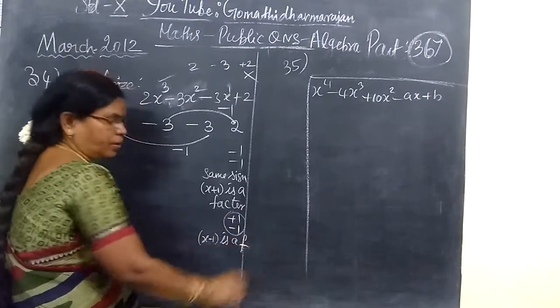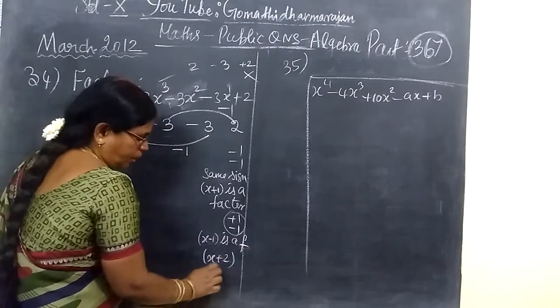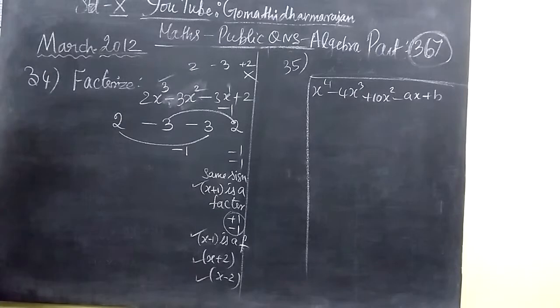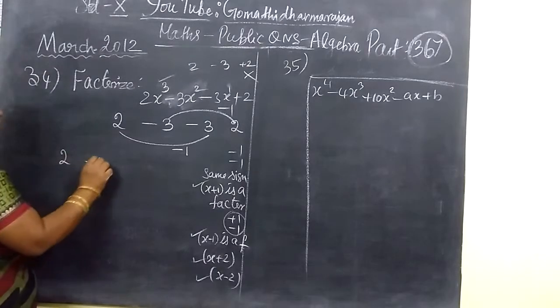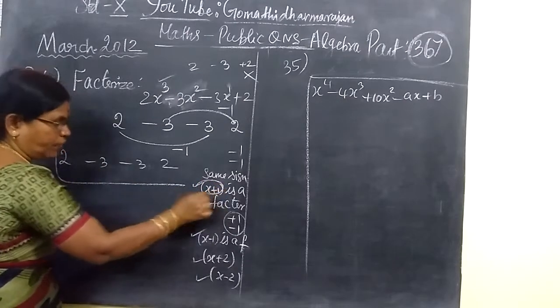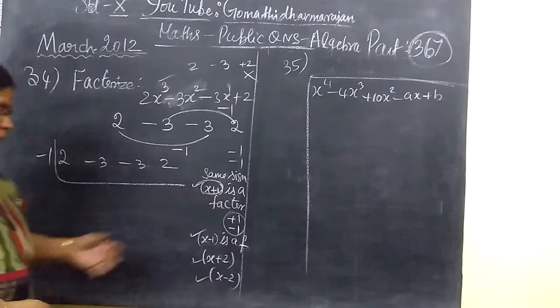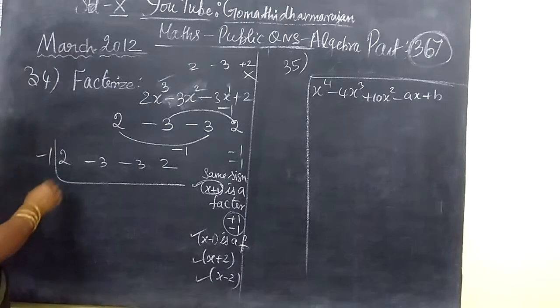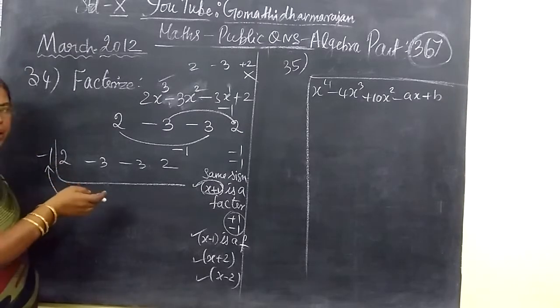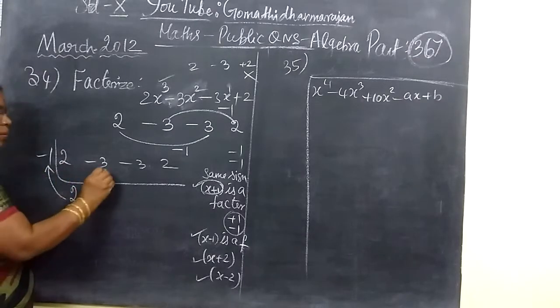x minus 1 is a factor. Same sign, x plus 2 or x minus 2. Now you collect it: 2 minus 3 minus 3, 2. x plus 1 is a factor. Since the signs are opposite, multiply the values. Some students are making mistakes in sign.